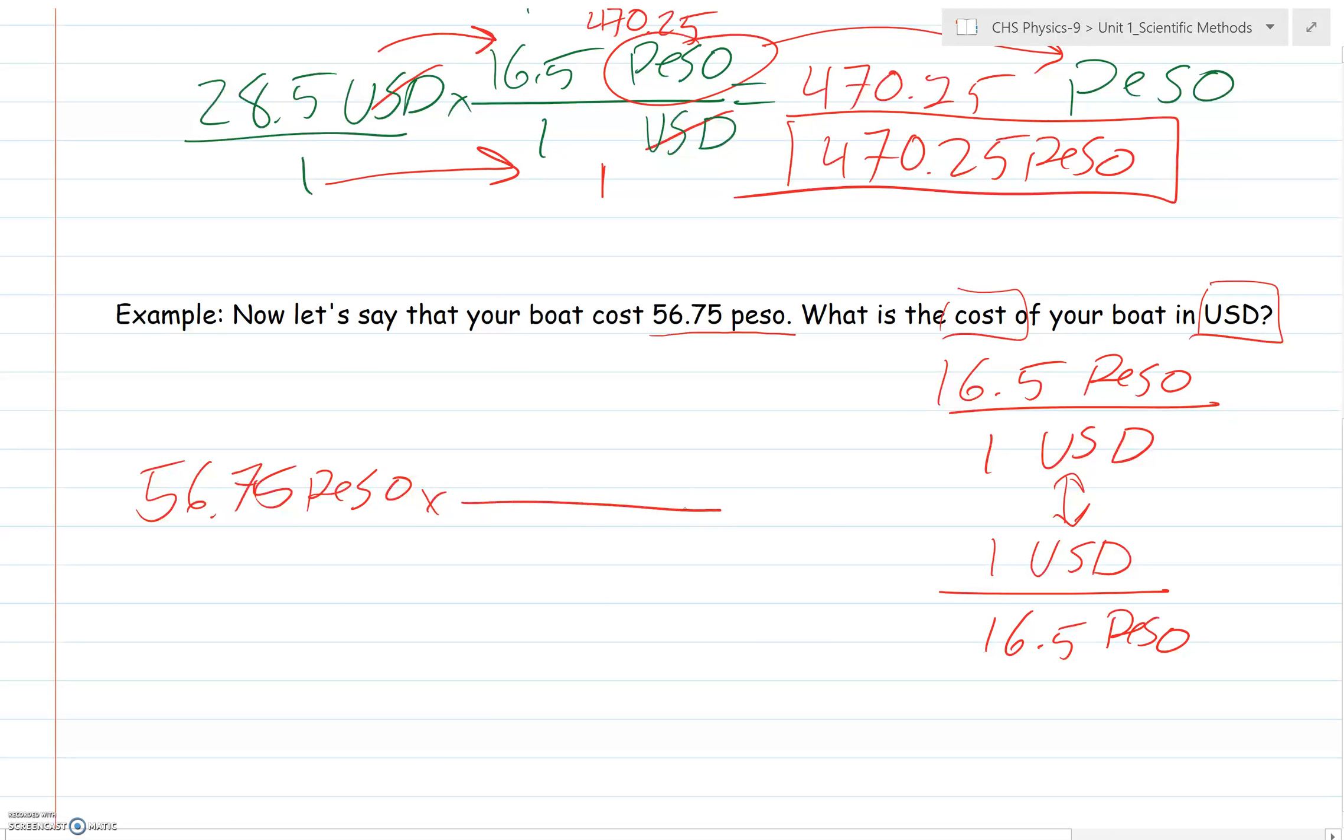I'm going to use that to my advantage. I want peso to go away, so peso has to go on the bottom. I'm trying to get to USD in the end, so I've got USD on the top. What number goes along with USD in both ratios? That's a 1. And which number goes with peso? 16.5. Even though these are written differently, they mean the exact same thing.